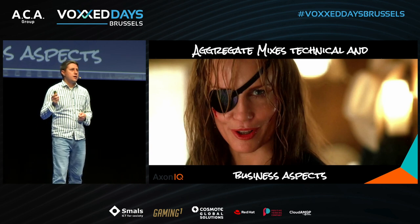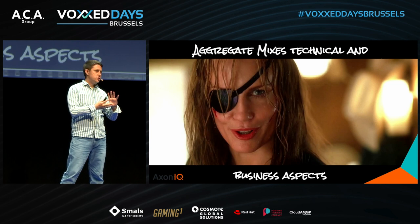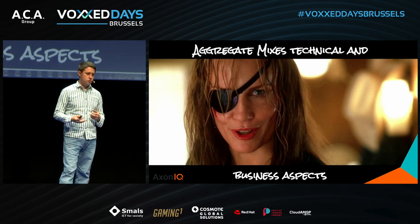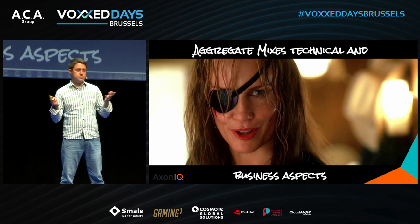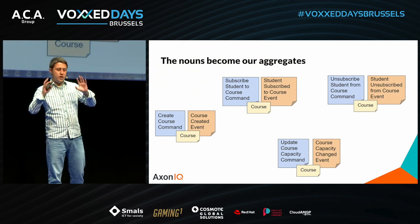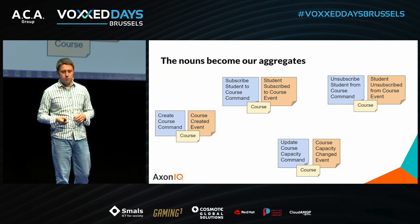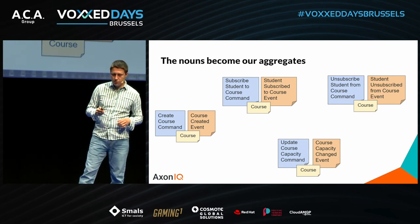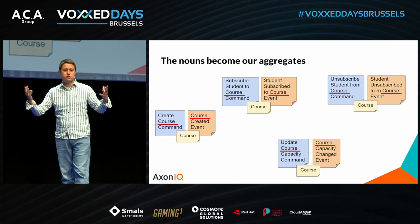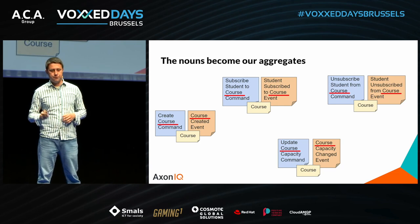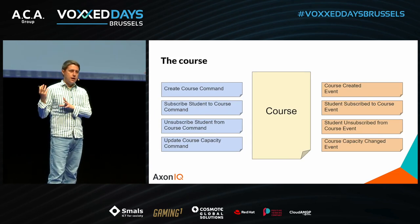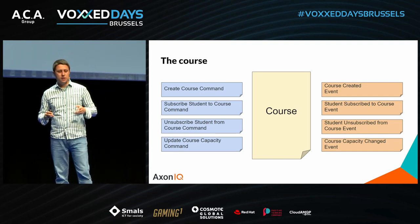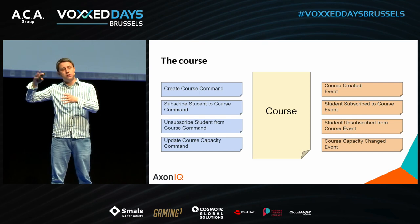Some people try to group data that change together and observe the system that way, but not everyone is capable of doing so. What people often do is look at the result of event storming and search for nouns — entity names — and in our case that is going to be the course. So the course becomes our aggregate, capable of handling commands for creating, subscribing, unsubscribing, and updating the course capacity, and responsible for publishing corresponding events.